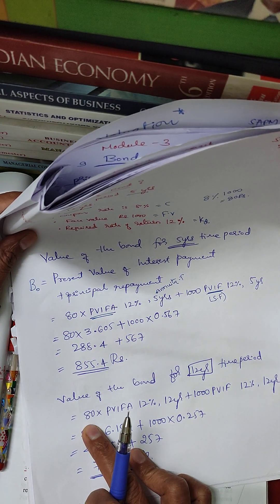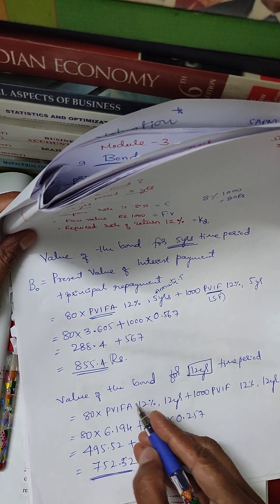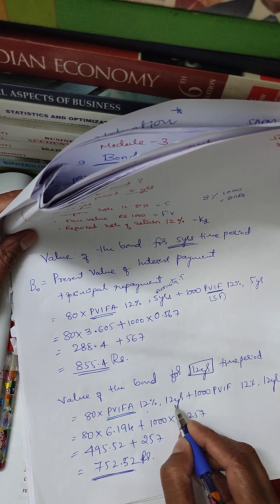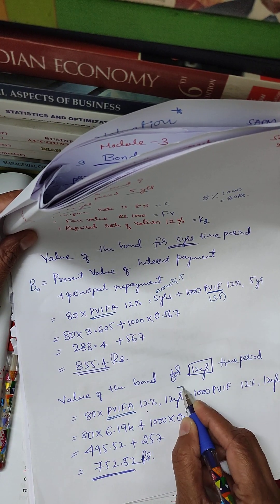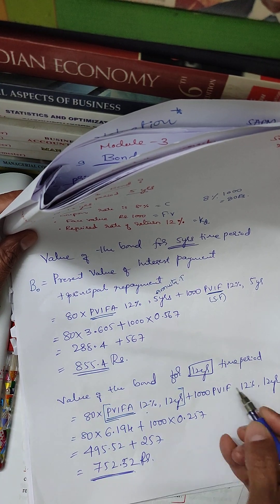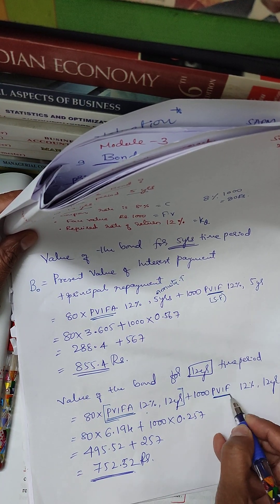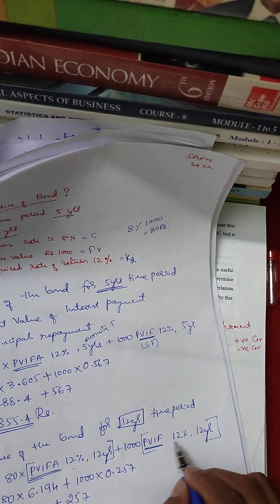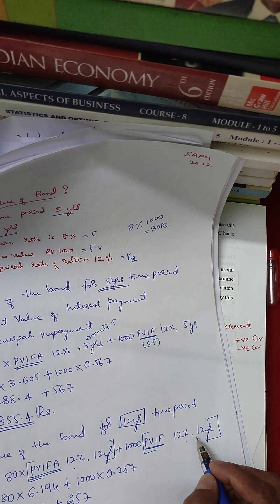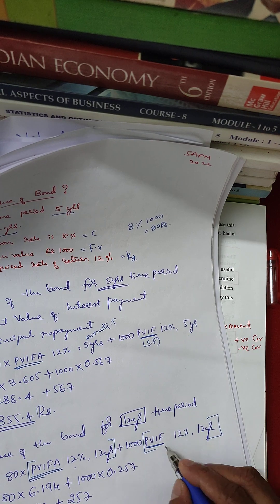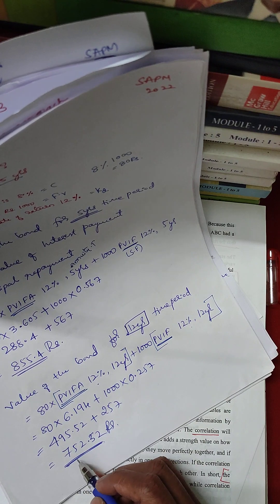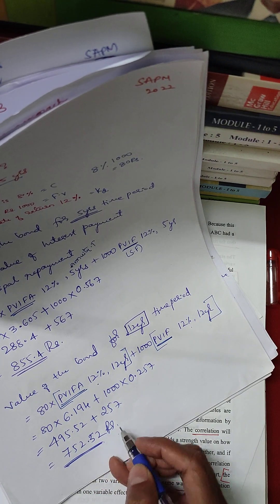For the 12-year bond, the coupon payment is 80 rupees, multiplied by PVIFA at 12% for 12 years. Plus 1,000 multiplied by PVIF at 12% for 12 years. The result comes out to 752.52 rupees. It is very simple.